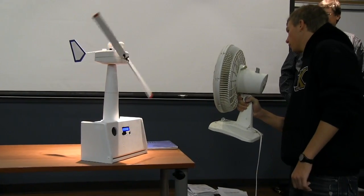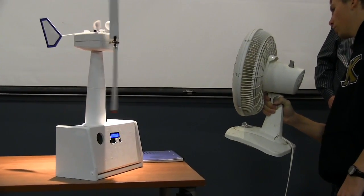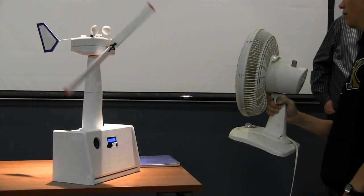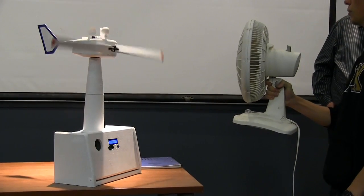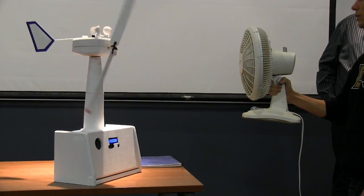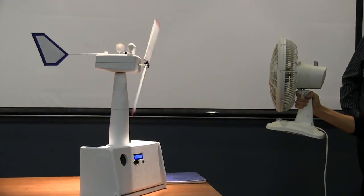So right now, it looks like we're generating about 0.8 volts. And the anemometer is spinning, so if I were to move this way, the tail is going to move, and it's going to point back into the wind.